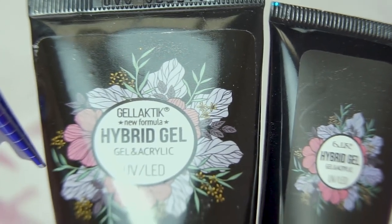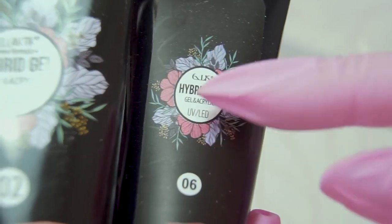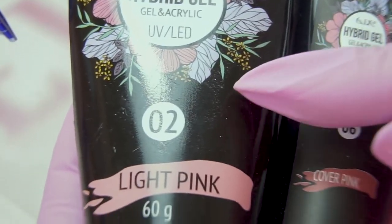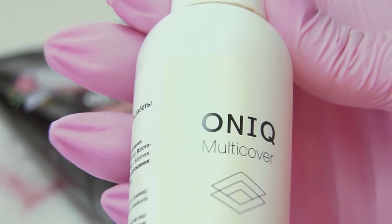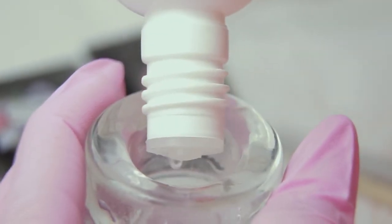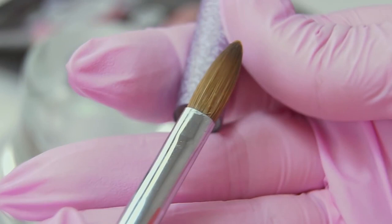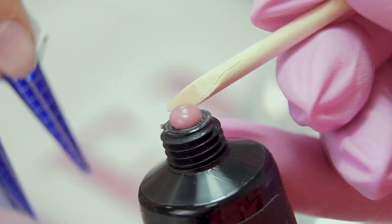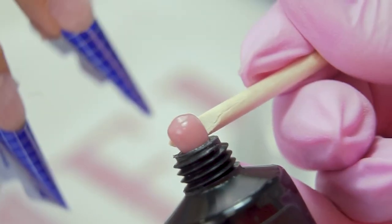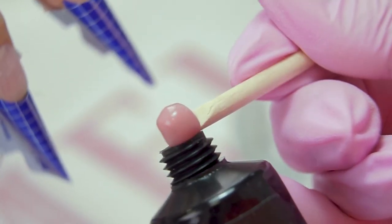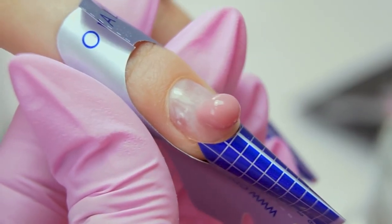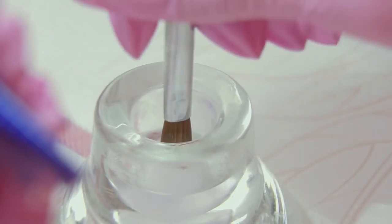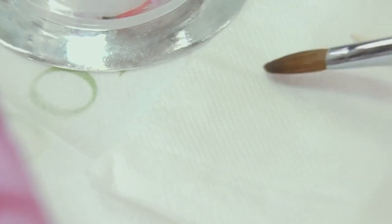I will be using Gelactic Camouflage Polygel and a transparent pink one, to build up the architecture and make a smooth transition near the cuticle. And this liquid from Honor Q to keep the brush from sticking. I'm using a natural brush for acrylic sculpting. I'm squeezing out a drop of the Hybrid Gel. Putting it in the center of the nail plate. I soak the brush in the liquid a little bit and wipe off the excess.